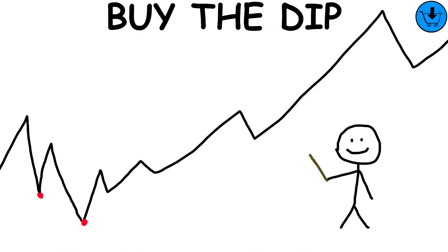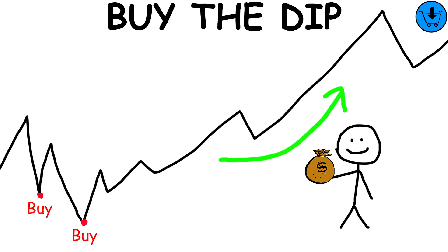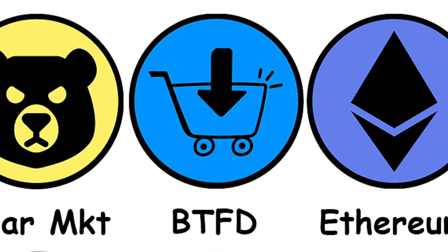Buy the dip: it is a strategy based on buying cryptocurrencies during phases of falling prices in order to make profits when they rise.